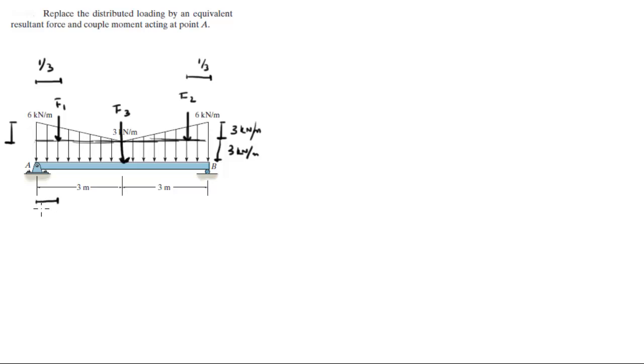So F1 from A acts at one meter because it's one third of the length of the triangle which is 3. F2 acts at 3 meters and I'm sorry, F3 acts at 3 meters and F2 acts at 5 meters because it's one meter from the other side.